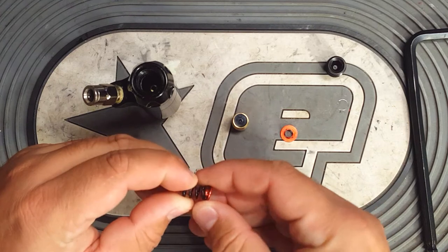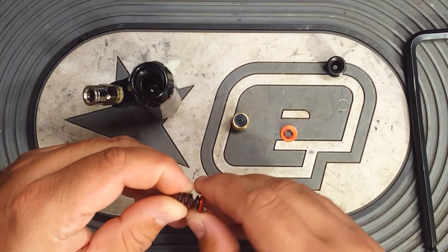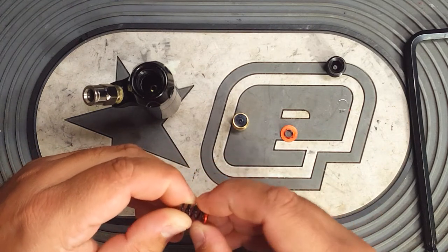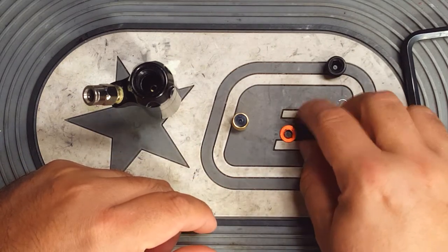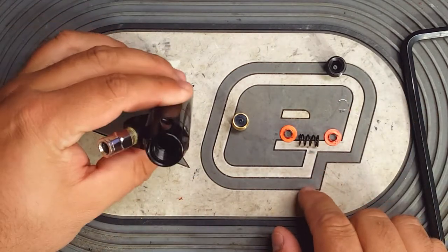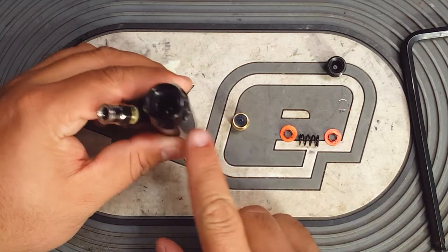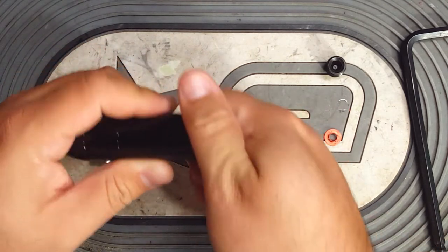One on the top and one on the bottom, and then inside you'll still have that same 008 o-ring.